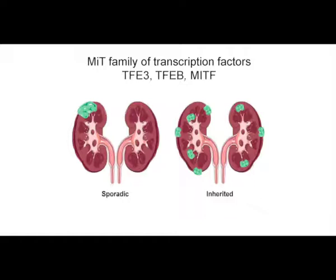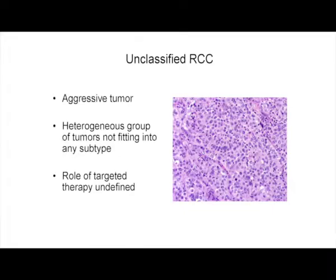Unclassified renal carcinoma is usually an aggressive tumor and a really heterogeneous group, and we're not sure about the role of targeted therapy.